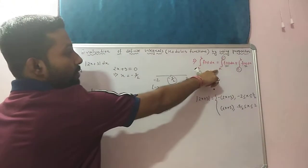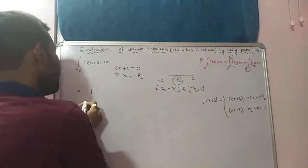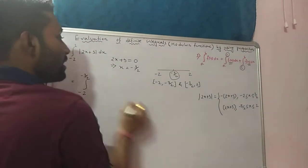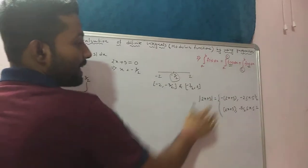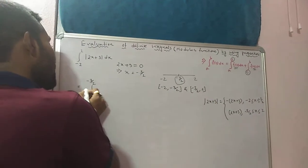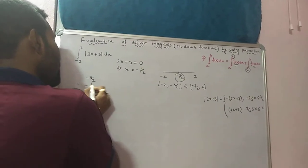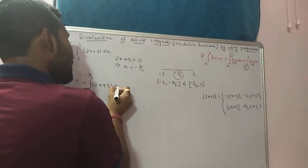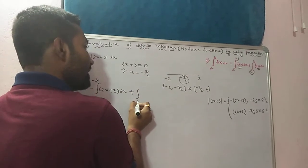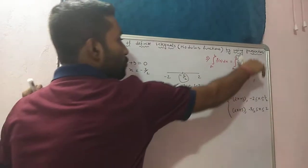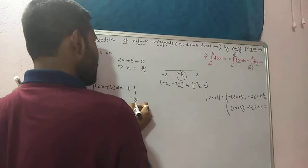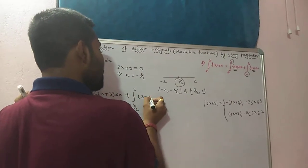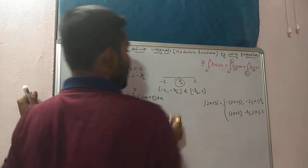Now use the splitting property. From a to c, that means minus 2 to minus 3 by 2, the value is negative, so write minus of (2x + 3) dx. Plus integration from c to b, that means minus 3 by 2 to 2, of plus (2x + 3) dx.